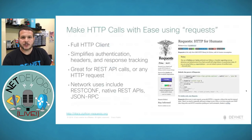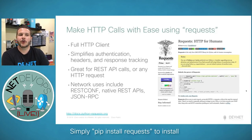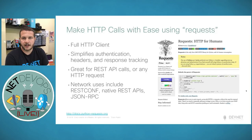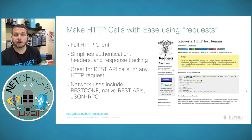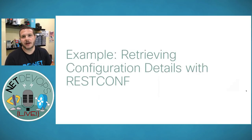Our first API library is for REST-based or HTTP-based APIs, and the best library for anything HTTP-based in Python is requests. In fact, Python's official documentation actually refers you to requests for HTTP requests rather than urllib, which is the built-in option. Requests gives us a full HTTP client — simplified authentication, headers, response tracking. It's great for any REST API call, including RESTConf, native REST APIs like NX-API, or JSON-RPC.